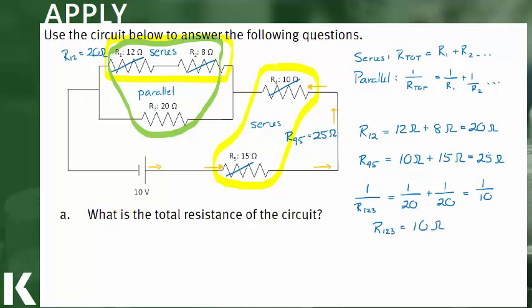Finally, we have R123 and R45 in series. So adding those together would get the total resistance. So we'll plug in R123, 10 ohms. We have R45 as 25 ohms. And this would give us a total resistance of this circuit as 35 ohms.